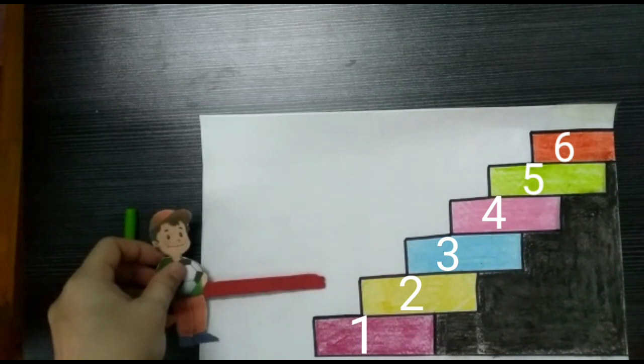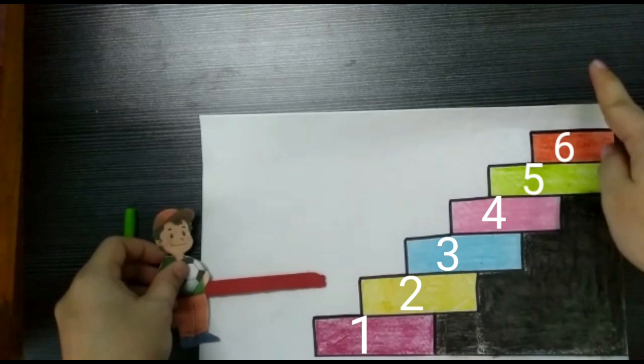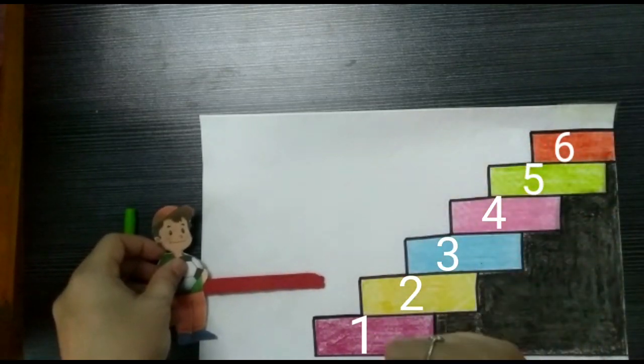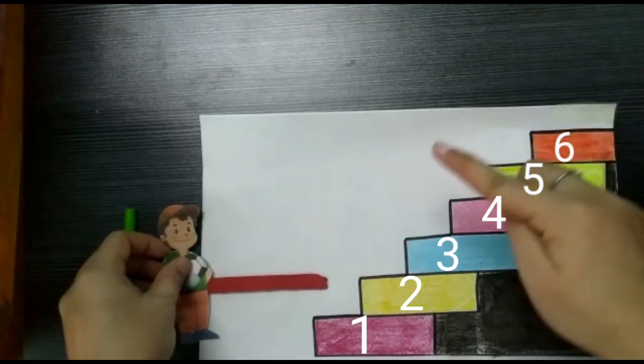Children, Tom moves from big number to small number. This means he is moving in descending order. Descending order means big number to small number.